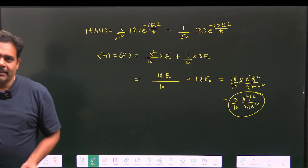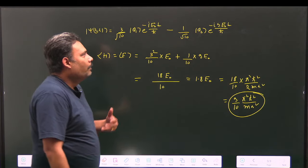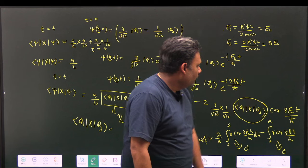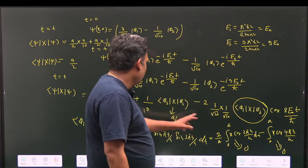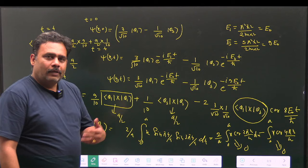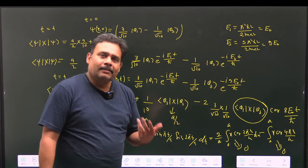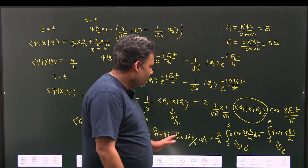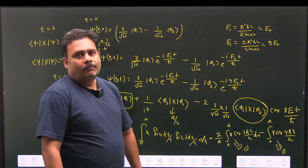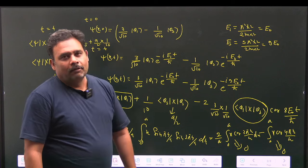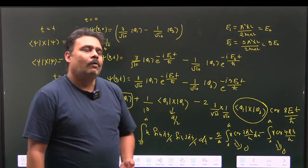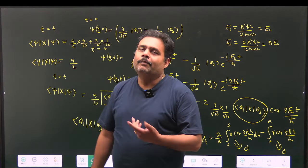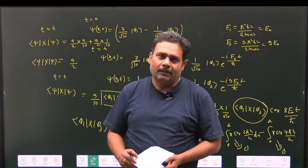Once your postulates are clear, you can do the mathematics sharply. The main thing is knowing which integrals survive. You need integration by parts and an understanding of the Schrödinger equation and its time evolution solutions. Thank you.